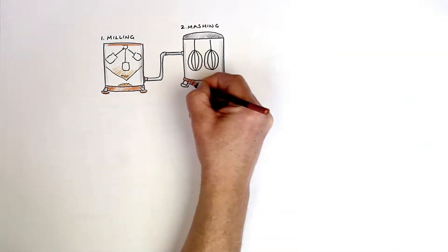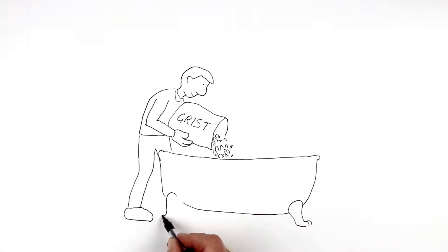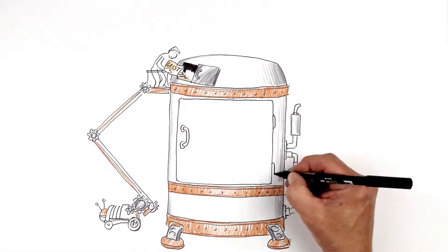Step two, mashing. This is where we give our grist a good soak in a nice hot water bath, turning it into mash. Probably a bit bigger than that, but more like a vat. The vat is called the mash tun.